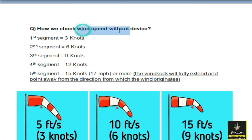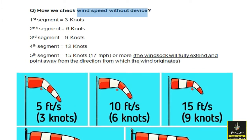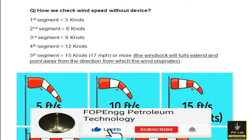How do we check the wind speed without a device? If you have the windsock and this is the first segment, if your windsock is like this and you don't have the device, you can imagine or calculate by this also. If there is a first segment, it shows three knots. Three knots means the wind speed is 5 feet per second.